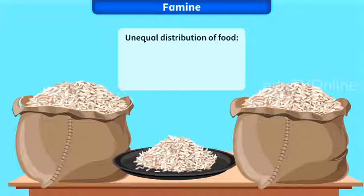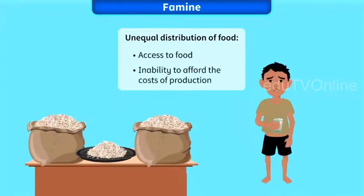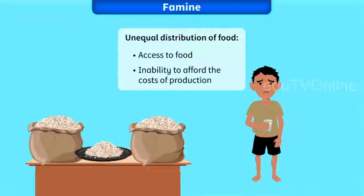Unequal distribution of food is a human-made cause. Food is produced in large amounts in many parts of the world. However, access to food and inability to afford the costs of production are the major problems faced by many developing countries.